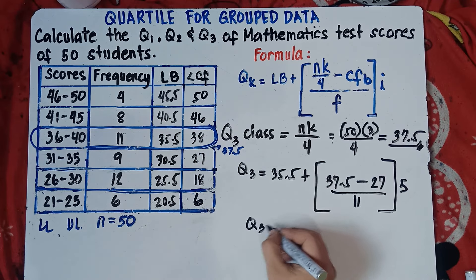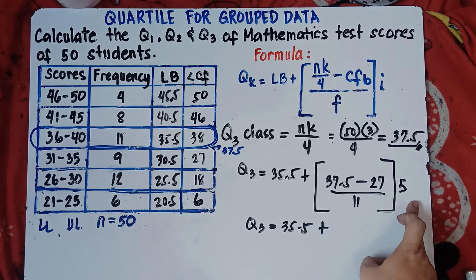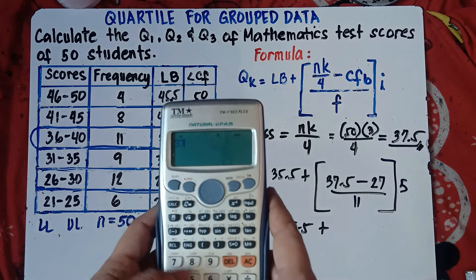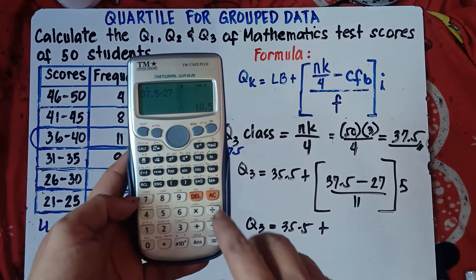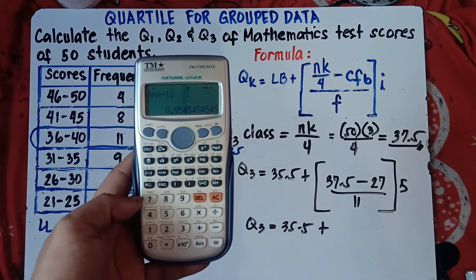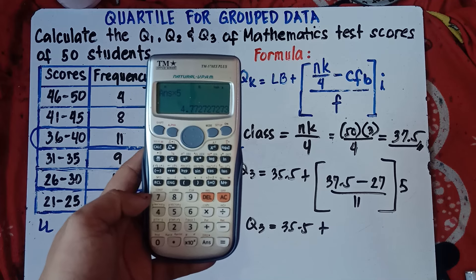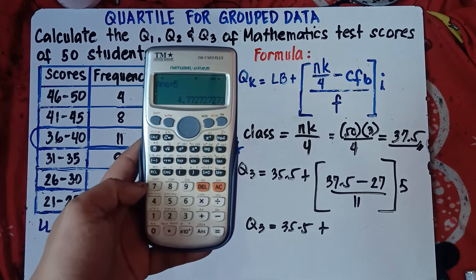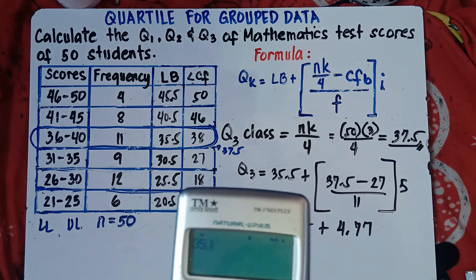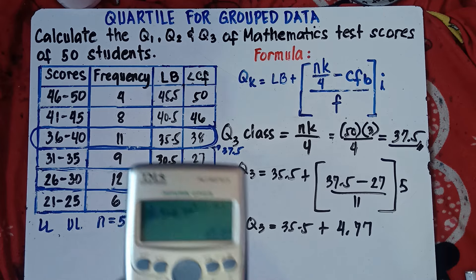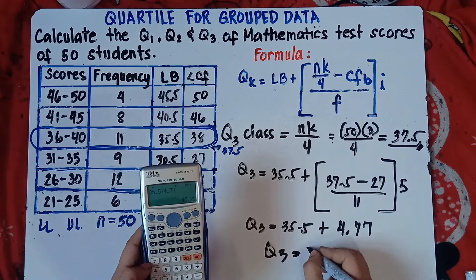Q3 equals 35.5 plus bracket 37.5 minus 27, over 11, times 5. Using the calculator: 37.5 minus 27 equals 10.5, divided by 11 equals 0.9545, multiplied by 5 equals 4.77. So Q3 equals 35.5 plus 4.77, which equals 40.27.